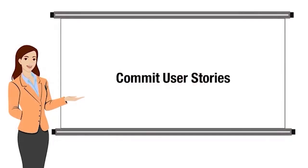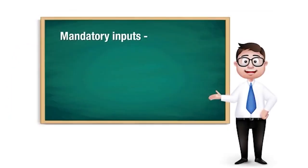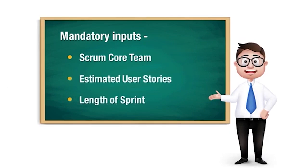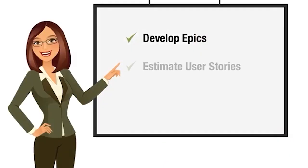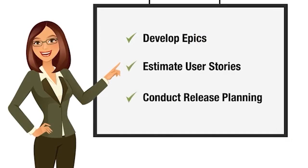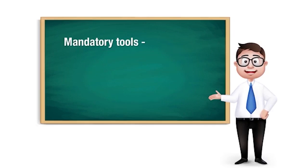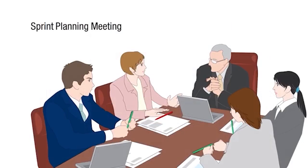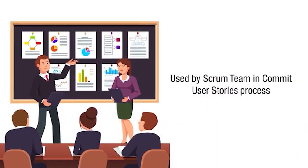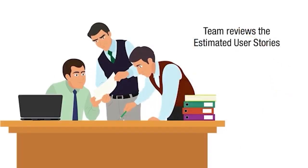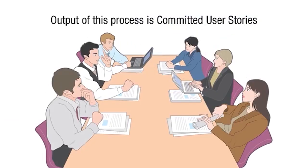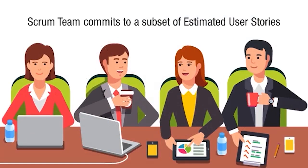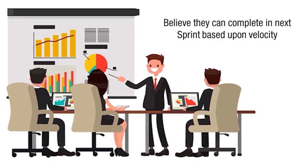The next process is Commit User Stories. The mandatory inputs are: Scrum Core Team, Estimated User Stories, and Length of Sprint. The mandatory tool is the Sprint Planning Meeting, used by the Scrum Team to plan the work to be done in the sprint. The team reviews the estimated user stories to commit to those they can deliver within the sprint. The mandatory output of this process is Committed User Stories — a subset of estimated user stories the team believes they can complete based upon velocity.